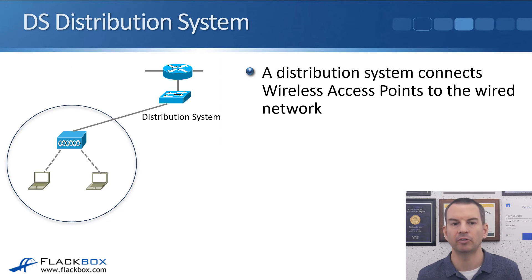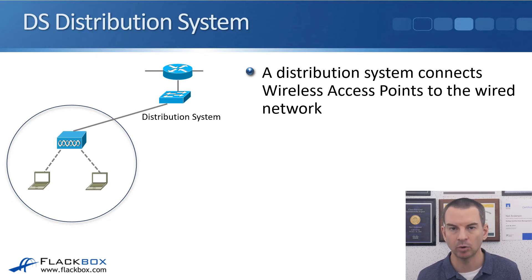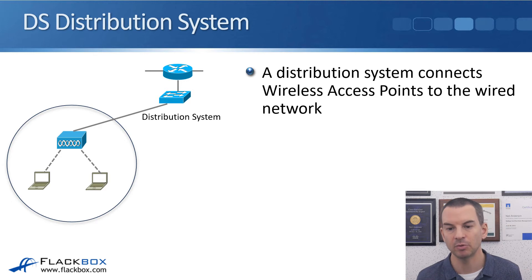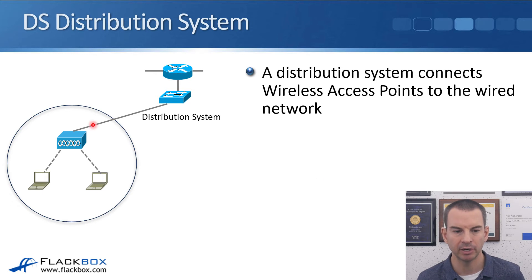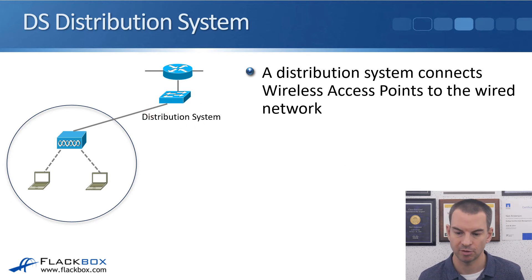Next terminology is DS, the Distribution System. Your wireless AP provides connectivity to the wired network for the wireless clients. It's the distribution system that connects the wireless access points to the wired network. In the example here, you can see our AP is connected to the switch. That's where it's getting connectivity to the wired network, so the switch is known as a distribution system.